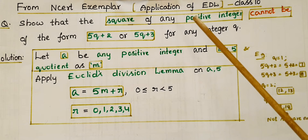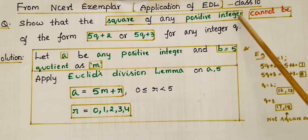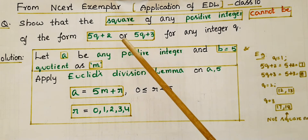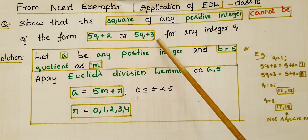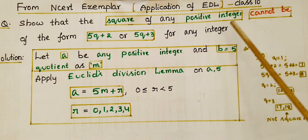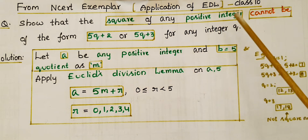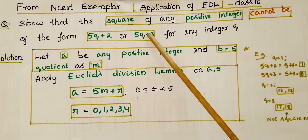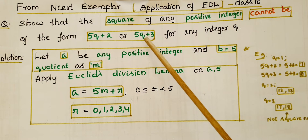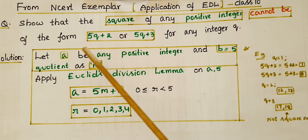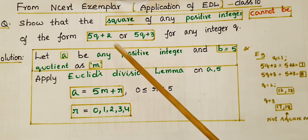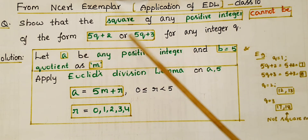Show that the square of any positive integer cannot be of the form 5q plus 2 or 5q plus 3 for any integer q. This is in the form of bq plus r, equal to a. So let us assume a be any positive integer and b is equal to 5.